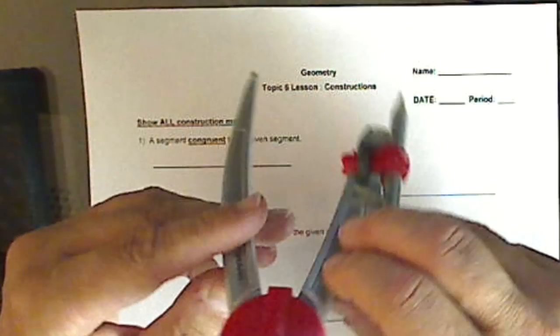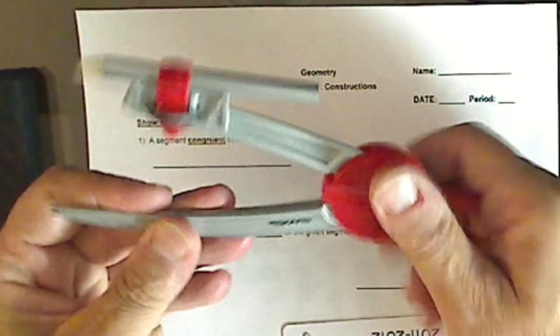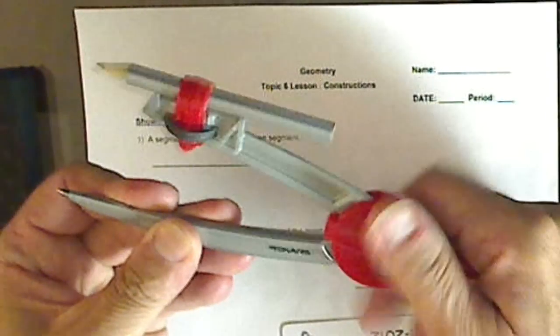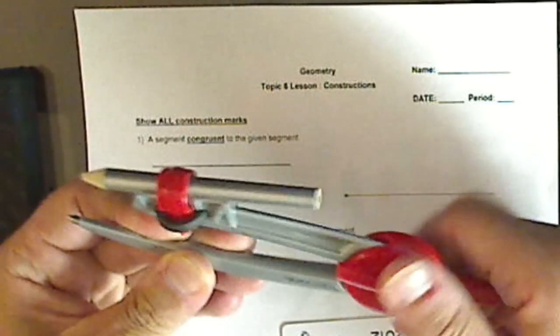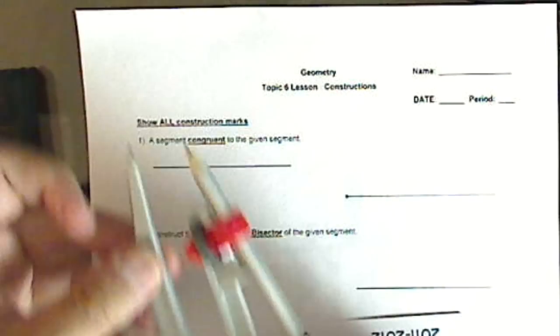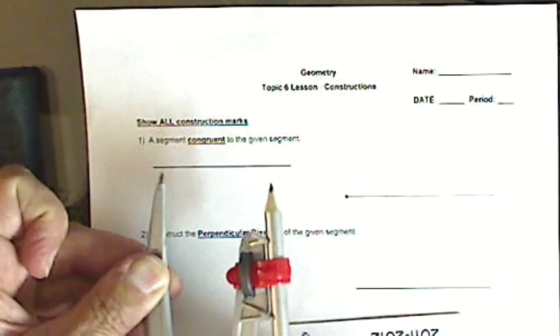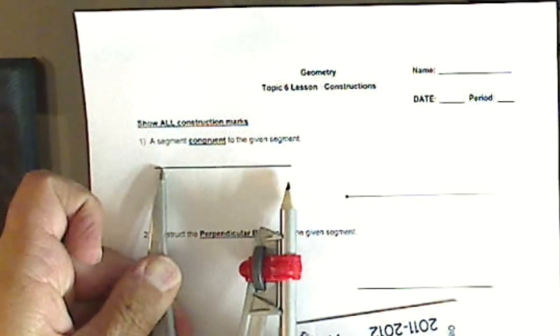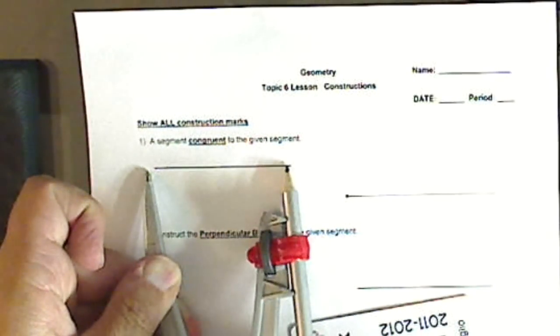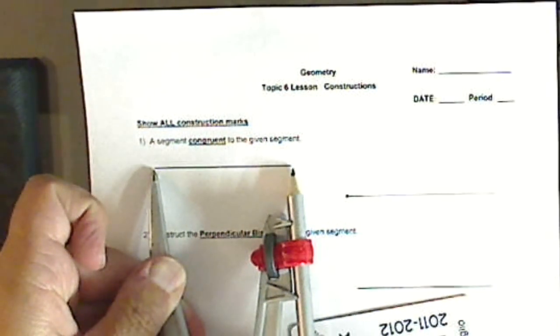The next thing I do is I use my compass, which has an adjustable trim type knob right here, and yours may just be one that opens or closes. And I open it until this point and that point at the end right there.